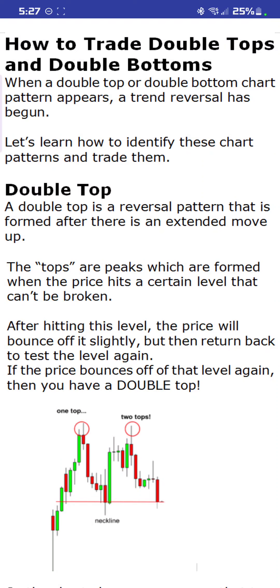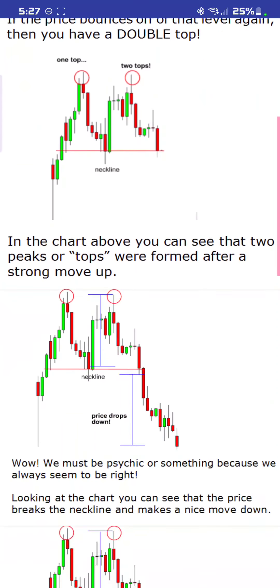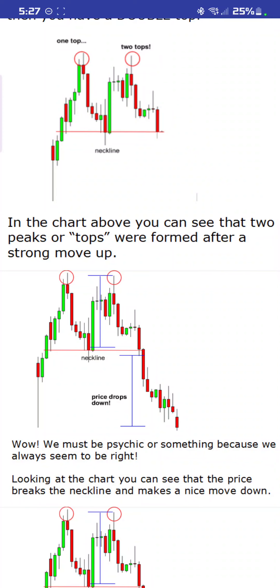We came down to the neckline, bounced back up, hit the same point, and then bounced down. The neckline is the basis between the two tops. In the chart above, you can see that the two peaks or tops were formed after a strong move up.